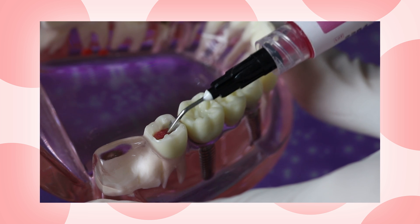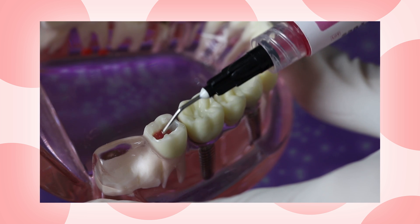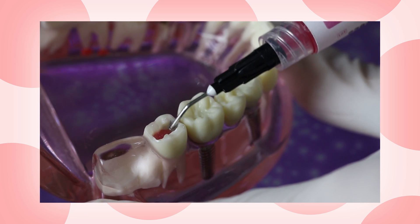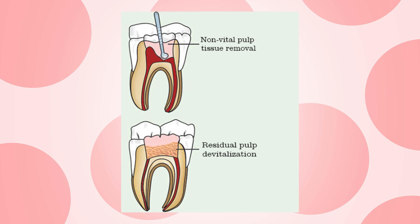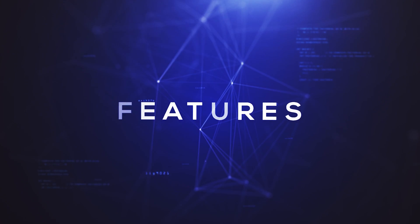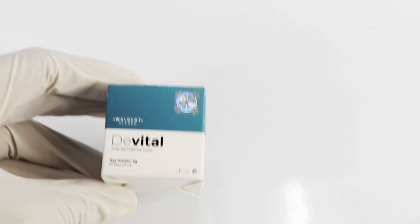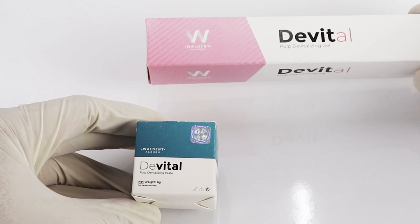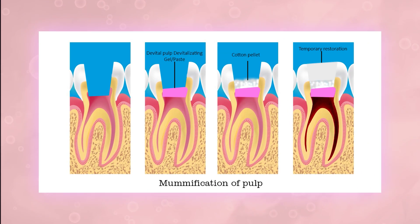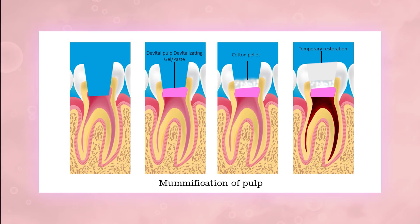Walden DeVital pulp devitalizing paste and gel is used prior to extirpation of pulp. It is also used for residual devitalization after removal of non-vital pulp tissues. It comes in both paste and gel form. It causes rapid mummification of pulp and relieves pain.